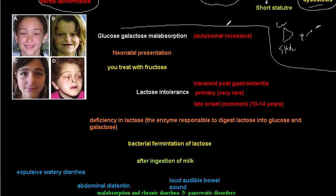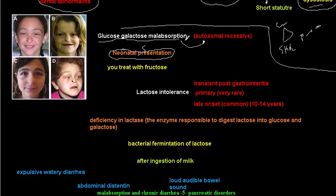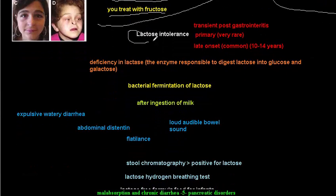Moving away from pancreatic insufficiency, another cause of malabsorption is glucose-galactose malabsorption. As mentioned in the first video, different causes of malabsorption present at different ages. Glucose-galactose malabsorption is an autosomal recessive disease with a neonatal presentation. The treatment is with fructose.